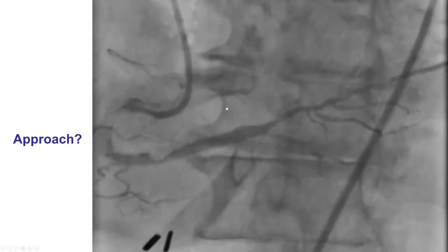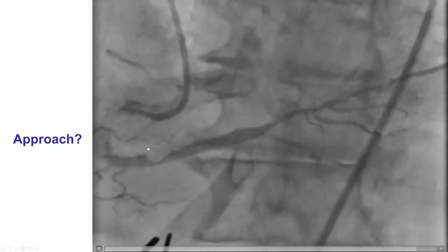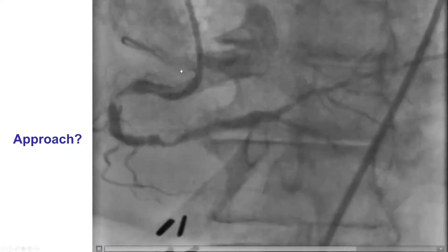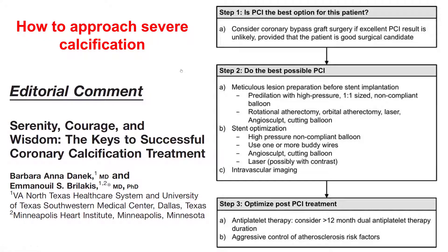There were many levels of complexity in the RCA: severe calcification, tight bends and significant tortuosity, and imperfect guide engagement. When treating such severely calcified lesions, it is good to proceed in a stepwise manner. The first question is whether PCI is the best option for this patient. As discussed, bypass was initially recommended based on the three-vessel disease and multiple complex lesions; however, the patient had declined coronary bypass. The second question is how to perform PCI in the best way — lesion preparation is key.